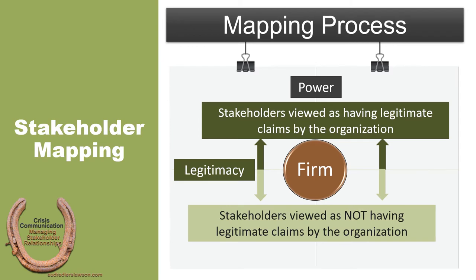The next component is legitimacy. This should be thought of as an organization's recognition that a stakeholder group has a viable interest in the operations or actions of the organization. Legitimacy does not suggest that the organization likes the stakeholders, but rather that they acknowledge the stakeholder's interest in the organization's actions and advocacy as fair and valid. In mapping legitimacy, those stakeholders viewed as having legitimate interest would be mapped above the horizontal axis, whereas those the organization views as illegitimate would be mapped below the line.